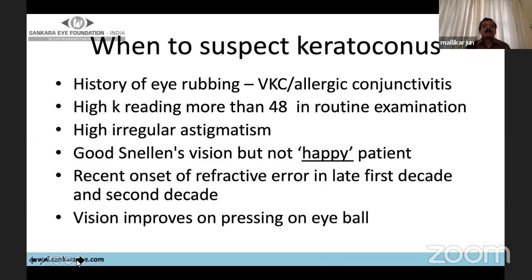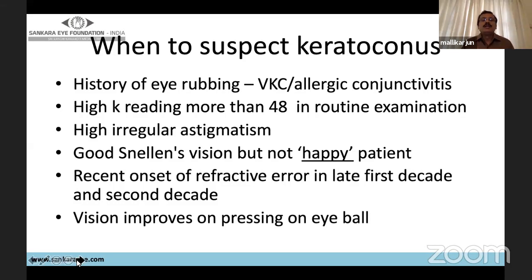Also suspect keratoconus in patients with high irregular astigmatism. Some patients will come with 6/6 central vision chart but complain that their vision is not as good as it used to be — these patients you have to suspect something in the cornea. Recent onset of refractive error in the late first or second decade should also raise suspicion, as keratoconus would have set in causing myopia.